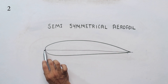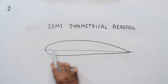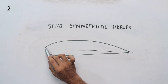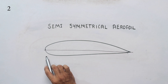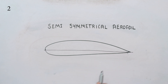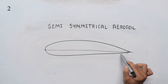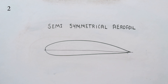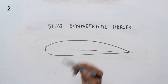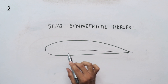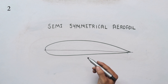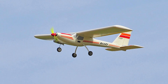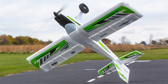We have a chord line from the leading edge to the trailing edge. The flat bottom Aerofoil has a straight lower surface, which produces lift efficiently. This type is used for trainer planes and semi-aerobatic planes. It produces good lift and manageable drag.